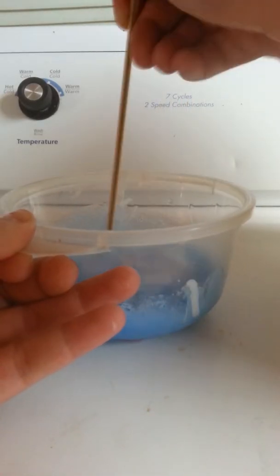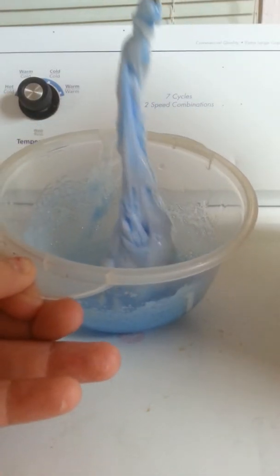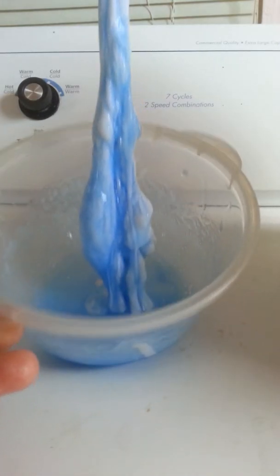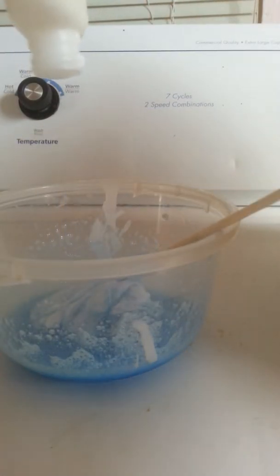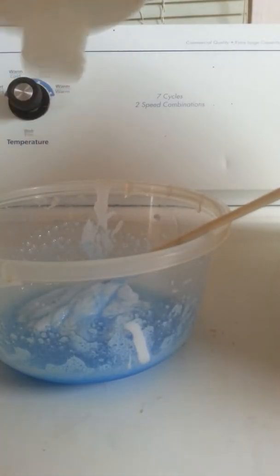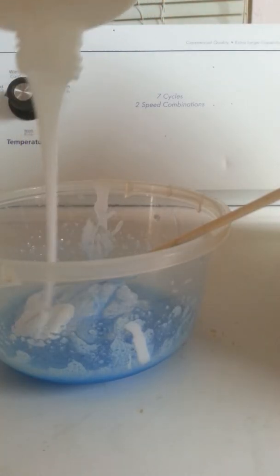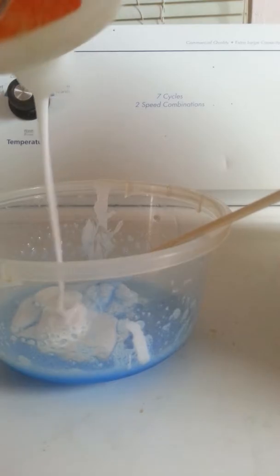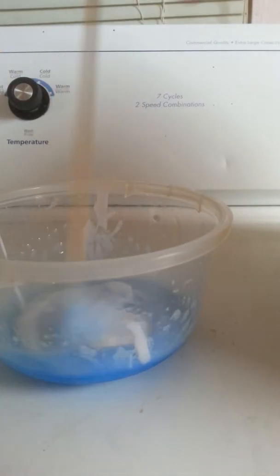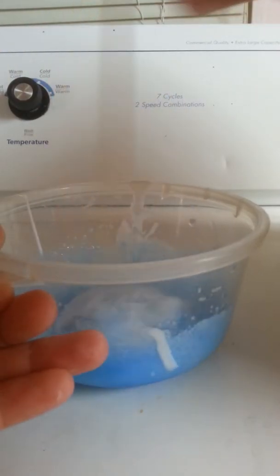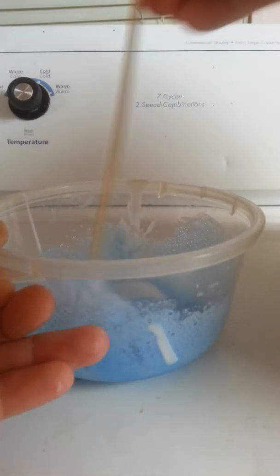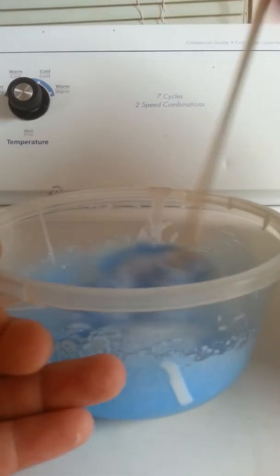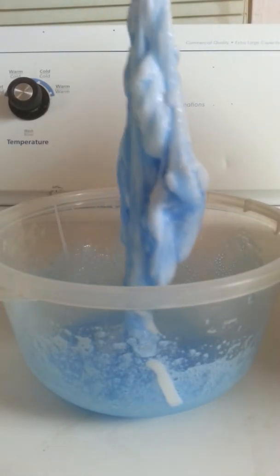So once you get it to the texture you want, if you still have too much detergent then just add more glue because then it will make it even bigger for you. And you want to mix it. It will also make it a color if your detergent is colored. Mine is blue.